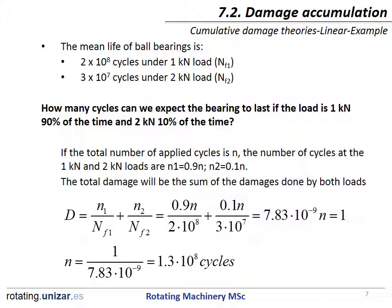If the total number of applied cycles is N, then the number of cycles at 1 kN and 2 kN loads are N1 equal to 0.9N and N2 equal to 0.1N respectively. Therefore, the total damage will be the sum of the damages done by both loads. Substituting the values into the expression and setting the damage equal to 1, we can obtain N — the number of cycles the bearings will last.